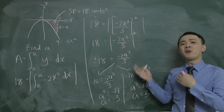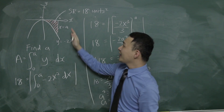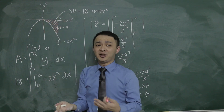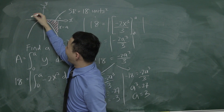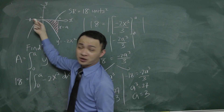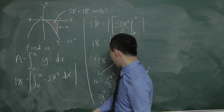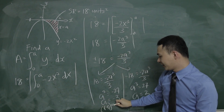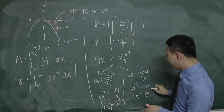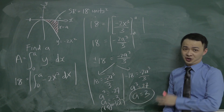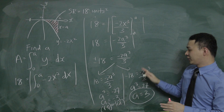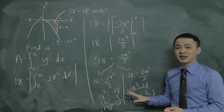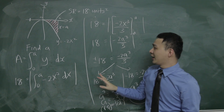Going back to the diagram, the position of a is on the positive x-axis, so a must be positive. Negative 3 is on the negative x-axis, which doesn't match the diagram, so I reject that answer. Therefore a equals 3 is the only valid answer.